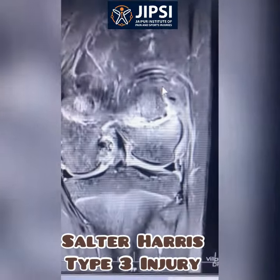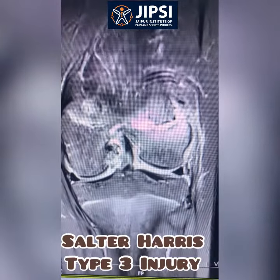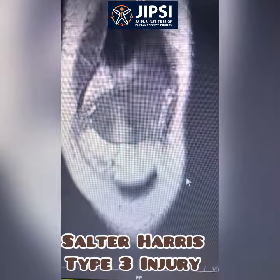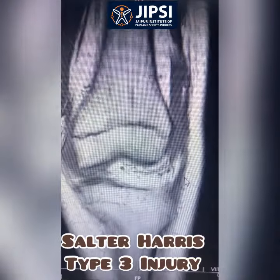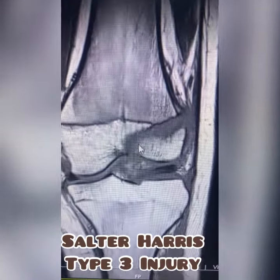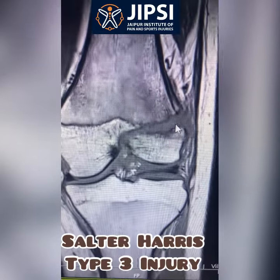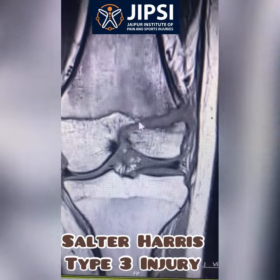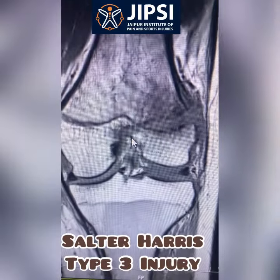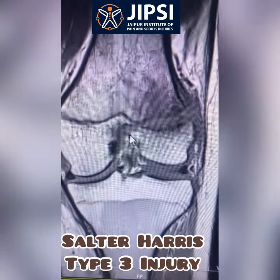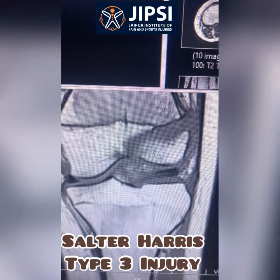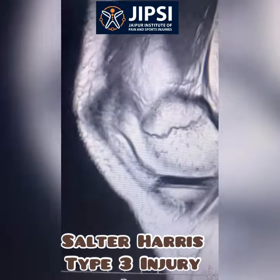So this is a classical Type 3 Salter-Harris classification. Looking at the fat-sat images, this is the fracture line extending through the epiphysis into the growth plate with widening of the plate, with the fracture line also extending into the intercondylar notch. Let's also look at the sagittal non-fat-sat image.